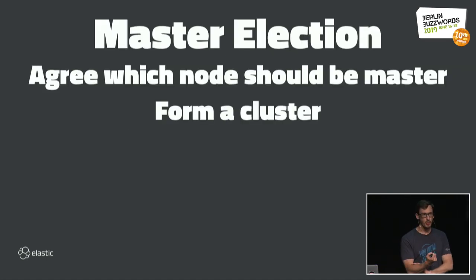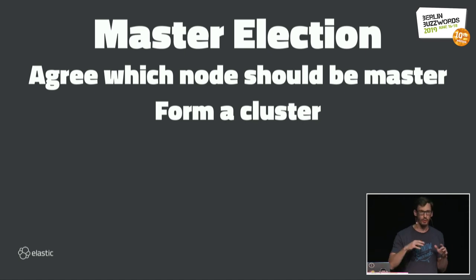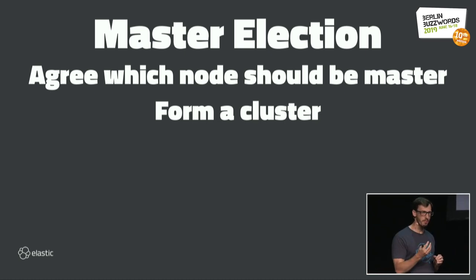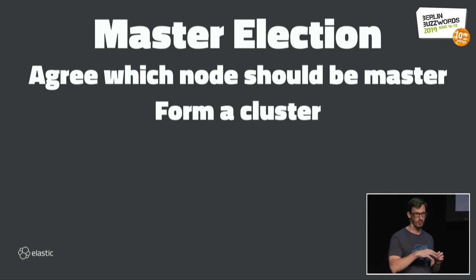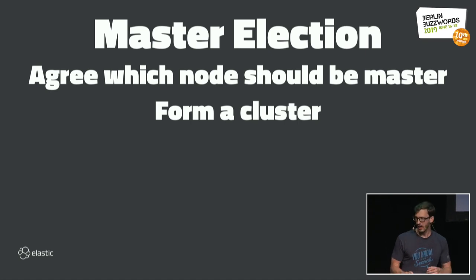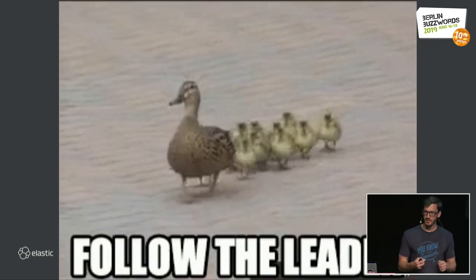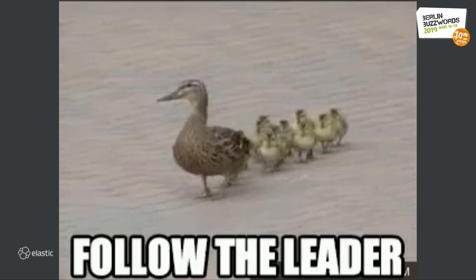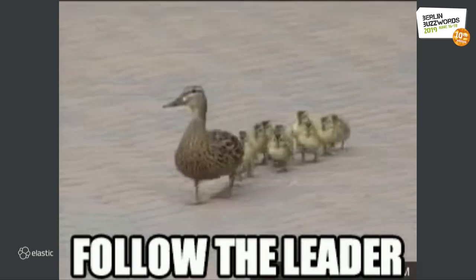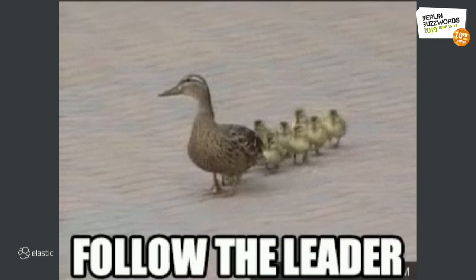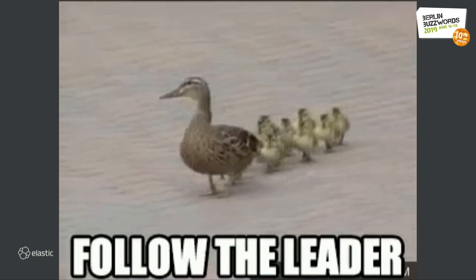Master election happens once nodes have found each other. The cluster decides who should be master, and unless something goes terribly wrong there will always be exactly one master node in an Elasticsearch cluster. You want to form that quickly because you cannot make any changes at all while there's no master. The general idea is you have one leader and everybody else follows that master node to whatever next state or step you want to take.